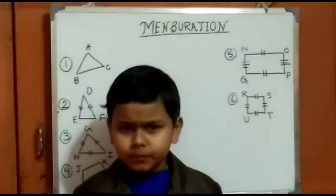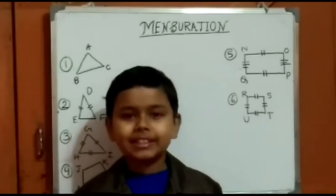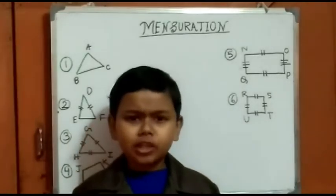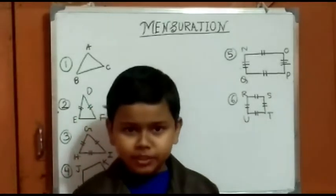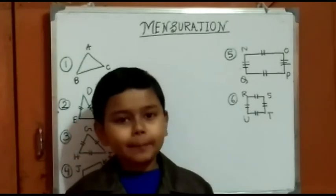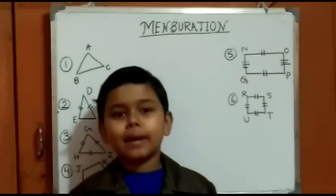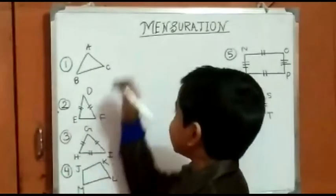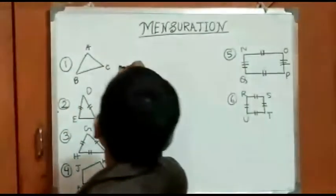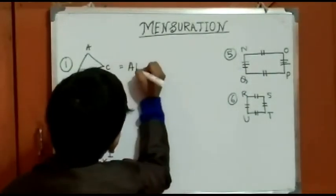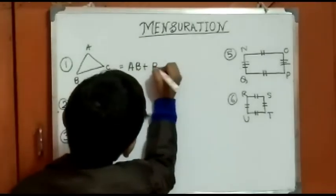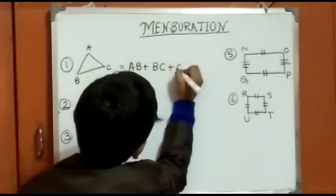The first closed figure that comes to our mind is triangle. So first of all let's find the perimeter of a triangle. The perimeter of a triangle is the sum of all sides. So this is a triangle, triangle ABC. So its perimeter is AB plus BC plus CA.